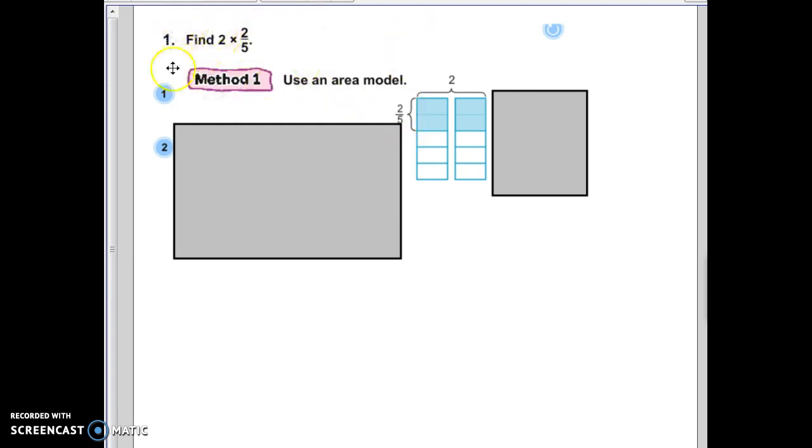To find 2 times 2 fifths, you can take a look at your 2 columns. If I have 2 fifths shaded in of both, then that means I have 4 fifths total. So, we know our answer is going to look like 4 fifths.